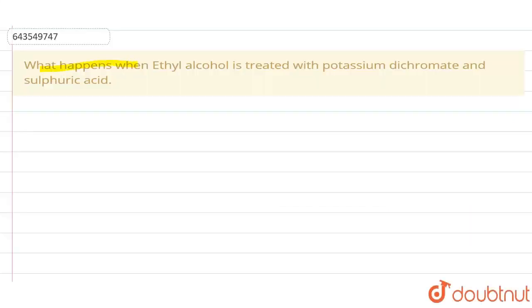What happens when ethyl alcohol is treated with potassium dichromate and sulfuric acid? The common name of ethyl alcohol is ethanol. What is the structure? That is C2H5OH.